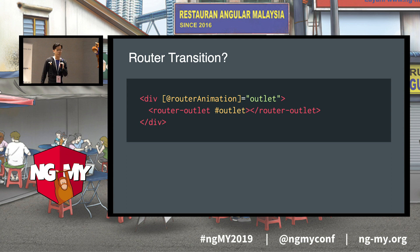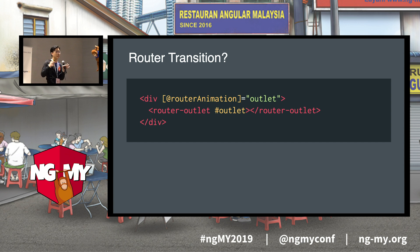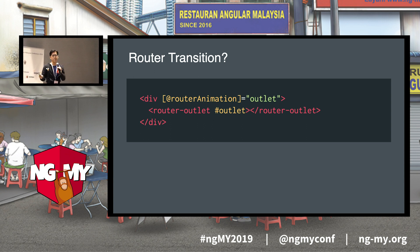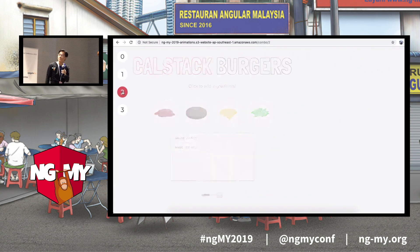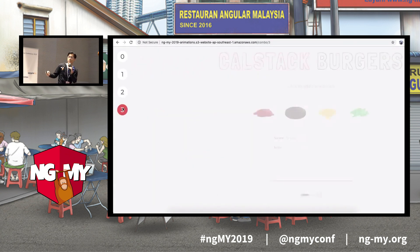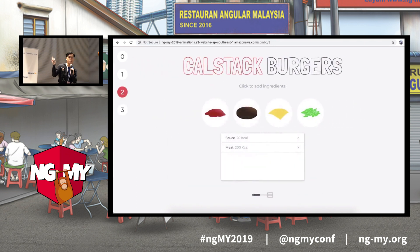Finally, we have router transitions. Every page in Angular is literally just a child component of the router outlet. By using the router outlet itself as a trigger point, we can make it so that whenever we navigate anywhere in our Angular application, we run an animation on the child component — which is essentially the page itself. Here we're navigating between pages, animating the old page off the screen and the new page in. I think that looks pretty neat.